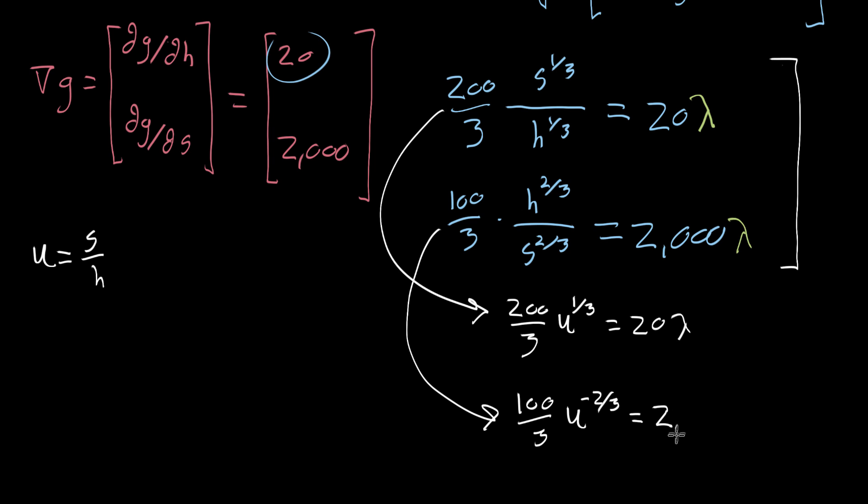We kind of want to treat H and S in the same package. Now let me go ahead and put all the constants together, and I'm gonna take this guy and multiply it by three divided by 200, multiply both sides of that, just to cancel out what's on the left side here. And what that's gonna give me, and I'll go ahead and write it over here, U to the one third is equal to, let's see, three over 200. So that 20 almost cancels out with the 200, it just leaves a 10. So that's gonna give me three tenths of lambda.